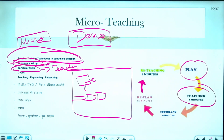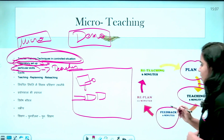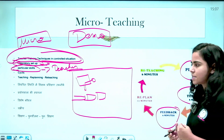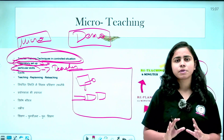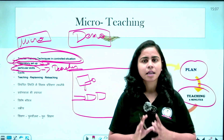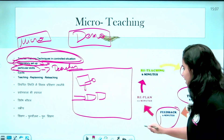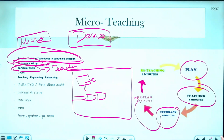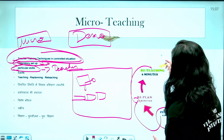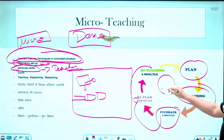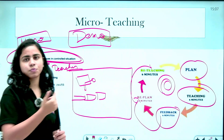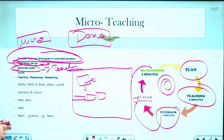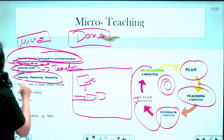After teaching, you get feedback. If your feedback shows issues — poor body language, lack of variety in methods — you can re-plan and then re-teach. This re-planning and re-teaching process continues, and it is cyclic in nature, allowing you to continuously improve your training.